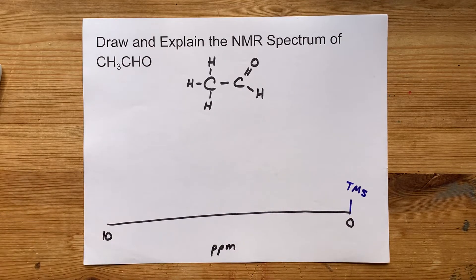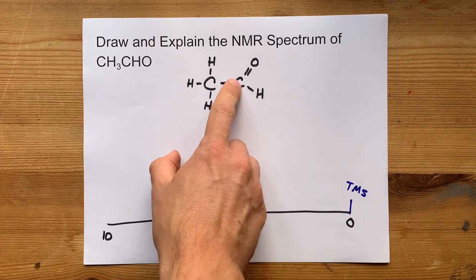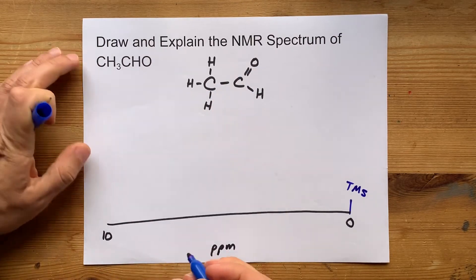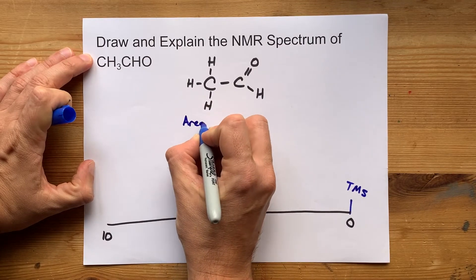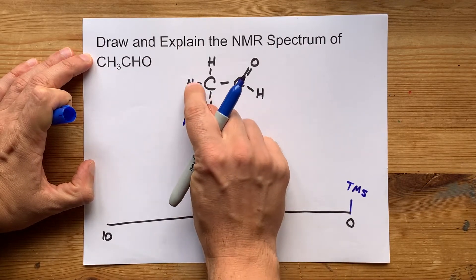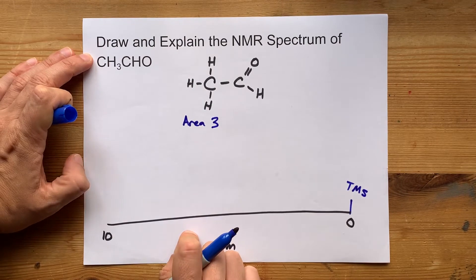Now, let's start with the methyl group. The methyl group is the furthest away from the electronegative atoms. It's going to have an integrated area of three because there are three equivalent hydrogens on that carbon.